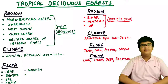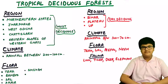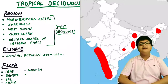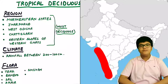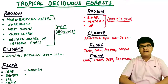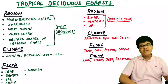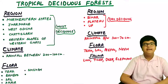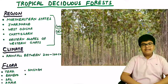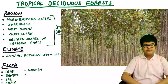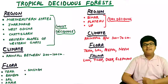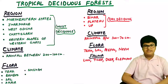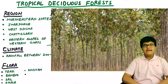Second, tropical deciduous forests are of two types: moist deciduous and dry deciduous. Moist deciduous forests are found in northeastern states, Jharkhand, West Odisha, Chhattisgarh, and the eastern slopes of the Western Ghats, receiving 100–200 cm of rainfall. Dry deciduous forests are found in Bihar, Jharkhand, and Uttar Pradesh, receiving 70–100 cm of rainfall. Flora in these forests includes teak, sal, peepal, and neem.